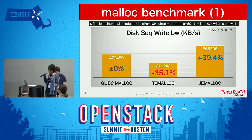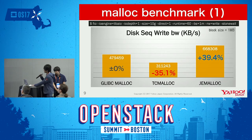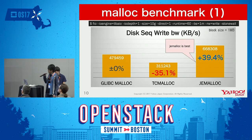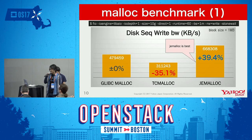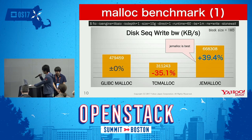This is the result of the sequential write benchmark. Compared to glibc malloc, TCmalloc shows 35% increased IO performance. jemalloc shows 40% increased performance.